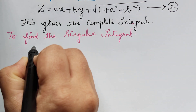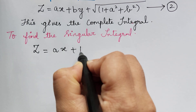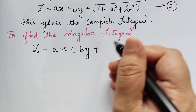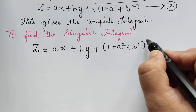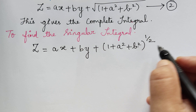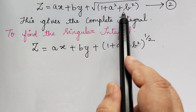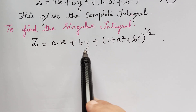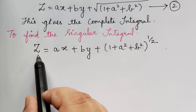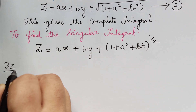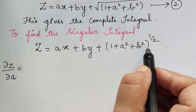First we rewrite equation 2 in a convenient form for differentiation: z = ax + by + (1 + a² + b²)^(1/2), so that we can use the chain rule easily. The next step is to differentiate equation 2 partially with respect to a.